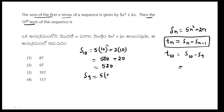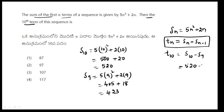Similarly, for S(9), substitute n = 9. 9 squared is 81, 81 times 5 is 405. 2 times 9 is 18. So S(9) = 423. Now 520 minus 423 gives us our answer: 97.